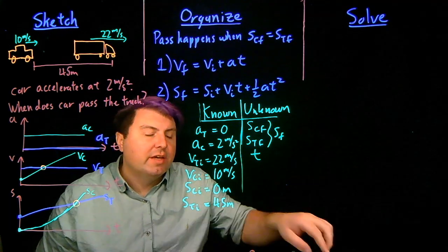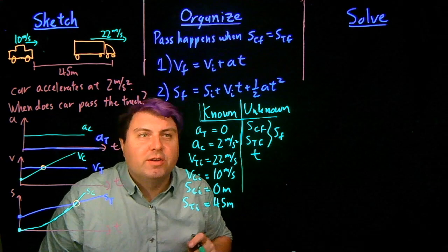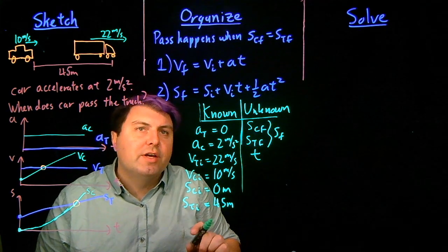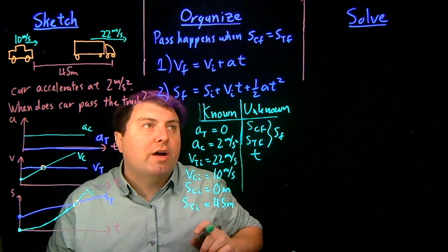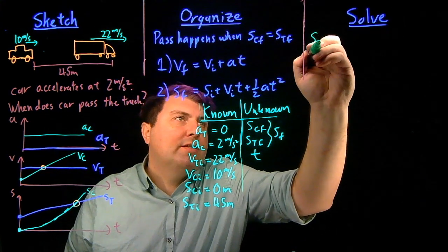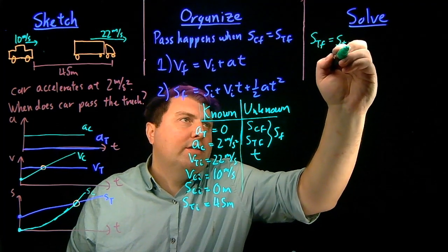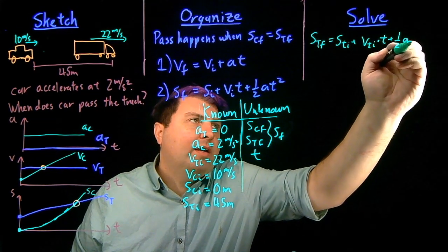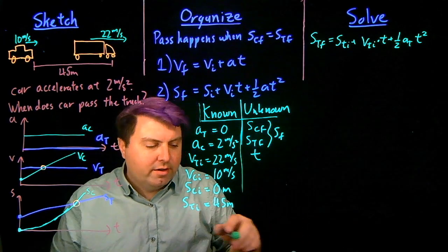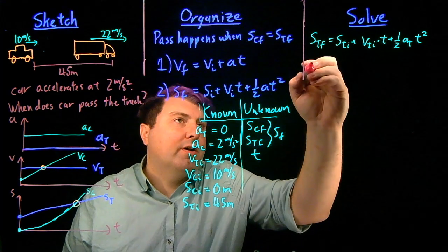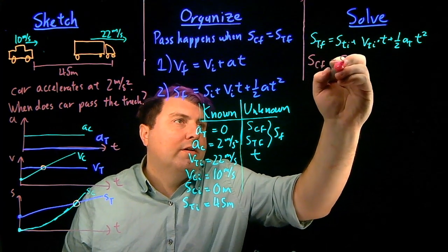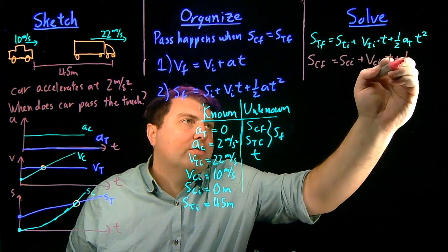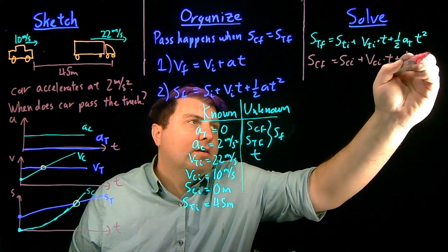So if we have all of this, then what we can do in our solve step is we can write out equation two. It's trying to connect our unknowns with our knowns. But we can write one for each vehicle. So I can write for the truck STF is equal to STI plus VTI times T plus one-half AT T squared. I can also write for the car SCF equals SCI plus VCI times T plus one-half AC T squared.